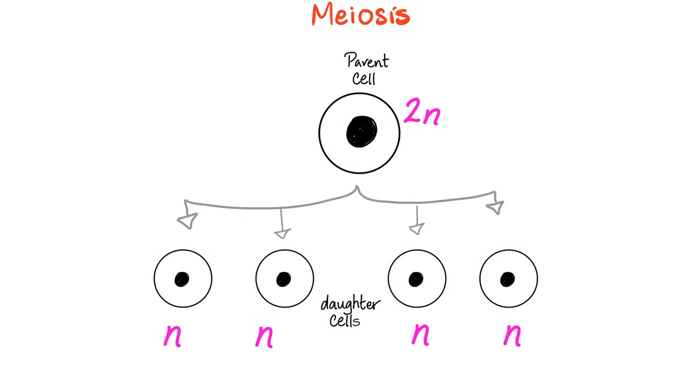If you remember my last video, I told you that in mitosis, each parent cell will give you two identical daughter cells. And if the parent cell was 2N, which means diploid, the two new daughter cells will also be 2N. However, in meiosis, when the parent cell is 2N, it will give you four cells.